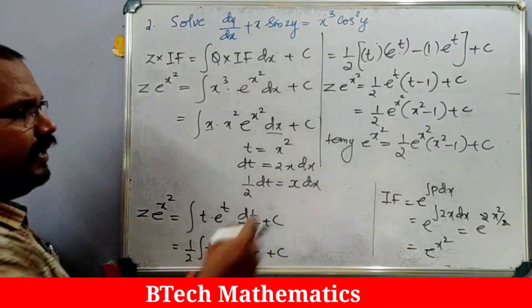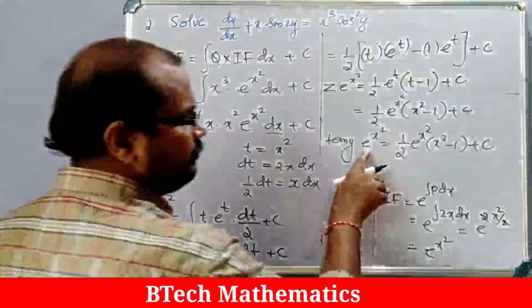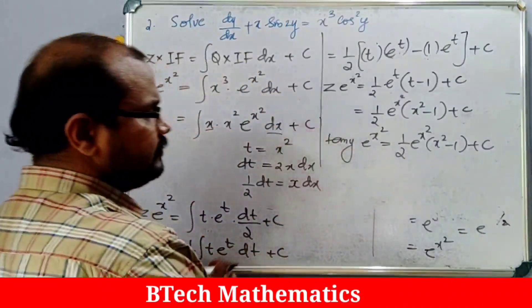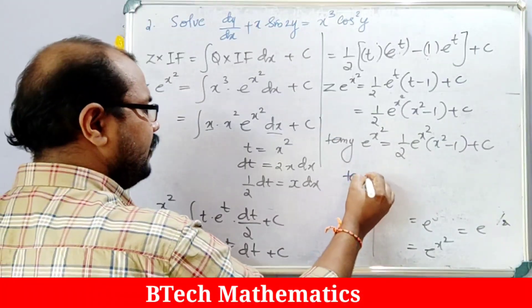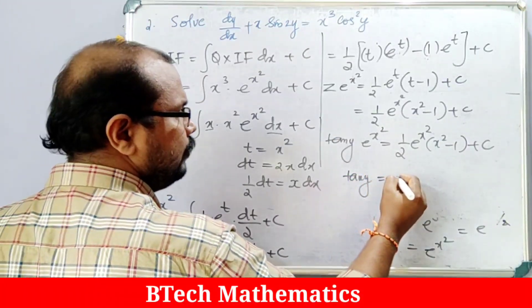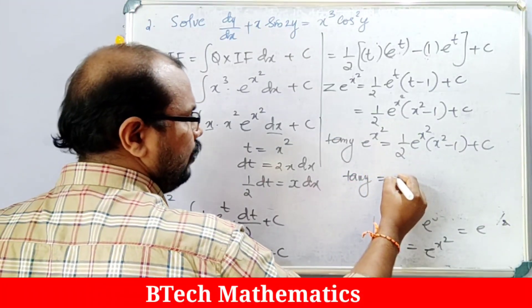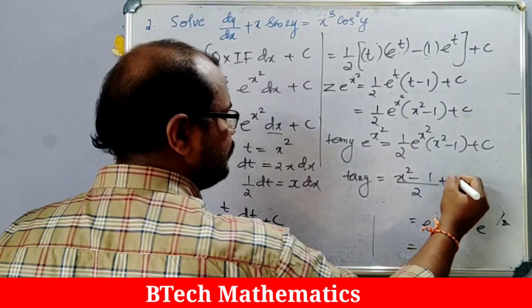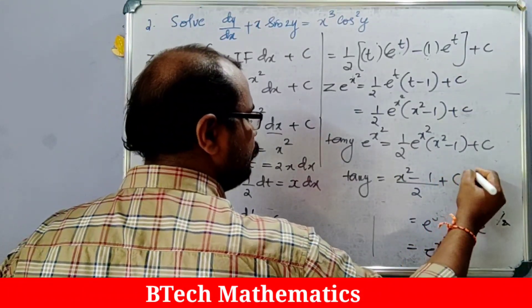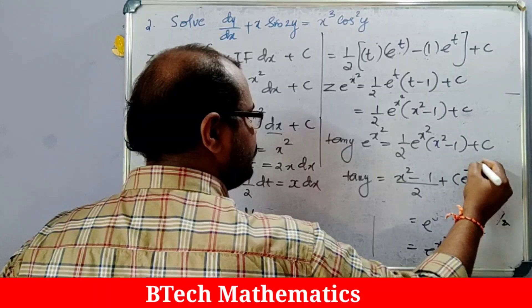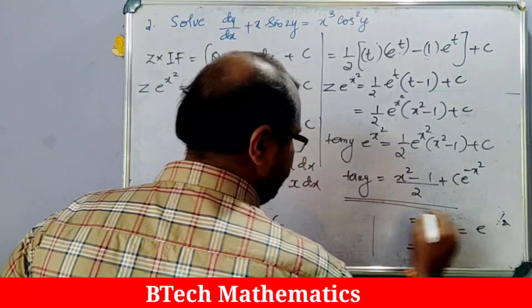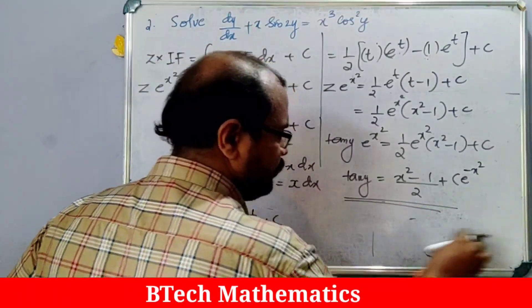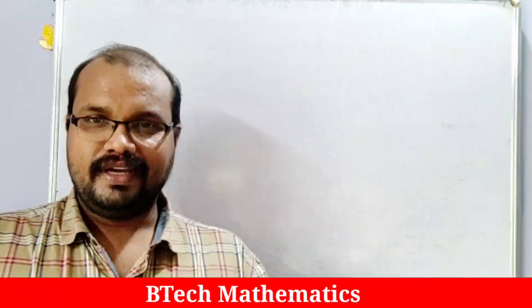Dividing throughout by e^(x²), we get the simplified final answer: tany = (x²-1)/2 + C·e^(-x²).